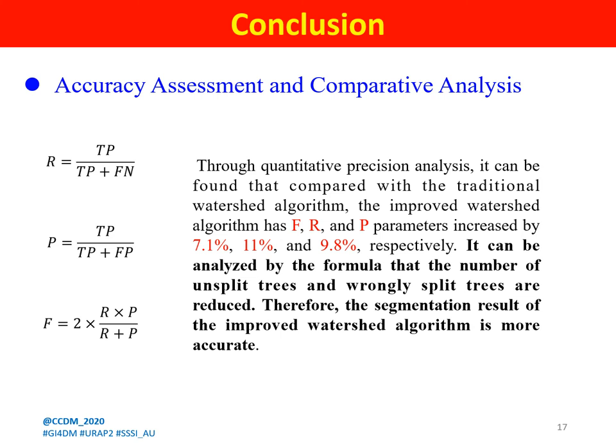In conclusion, analysis of the results shows that the number of missed trees and wrongly detected trees is reduced. Therefore, the segmentation result of the improved watershed algorithm is more accurate.